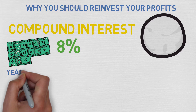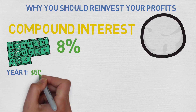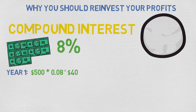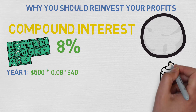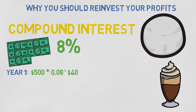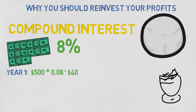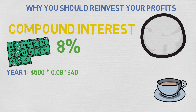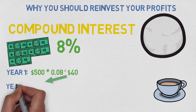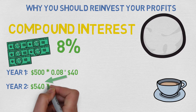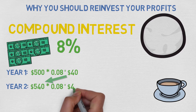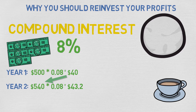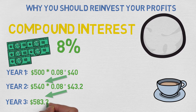Your first year profits will be 500 dollars times 0.08 equals 40 dollars. This time, you've found Graham Stephan's YouTube channel, so instead of wasting your profits on Starbucks, you decide to drink 20-cent iced coffee and reinvest the 40 dollars. So in the second year, your profits will be 540 dollars times 0.08 equals 43.20 dollars. You reinvest again, and your third year profits will be 583.20 dollars times 0.08 equals 46.60 dollars.